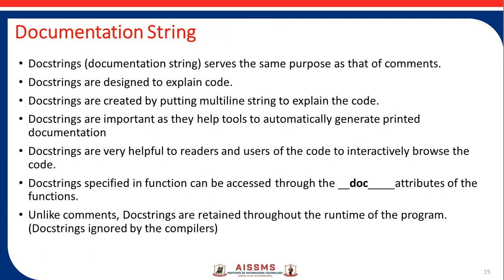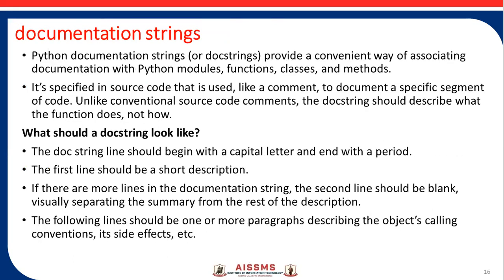In documentation strings, a docstring serves the same main purpose as a comment, and docstrings are designed to explain the code. What should a docstring look like? The docstring line should begin with a capital letter and end with a period. The first line should be a short description. If there are more lines in the documentation string, the second line should be blank, visually separating the summary from the rest of the description. The following lines should be one or more paragraphs describing the object.